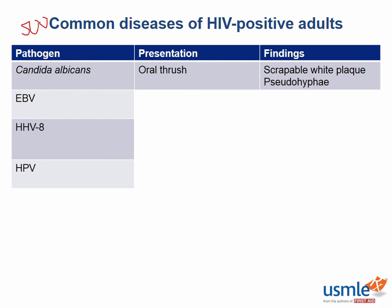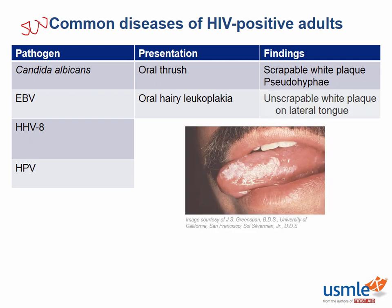Epstein-Barr virus will cause a disease that appears quite similar to oral thrush, called oral hairy leukoplakia. The key way to distinguish between this and oral thrush is that hairy leukoplakia is an unscrapable white lesion generally found on the lateral aspect of the tongue, in comparison to Candida oral thrush which causes a scrapable white plaque.